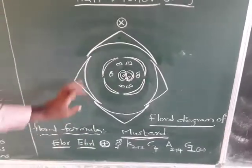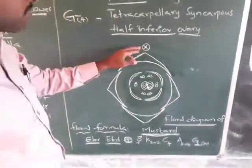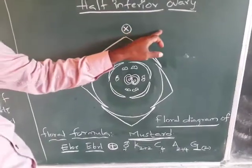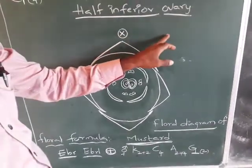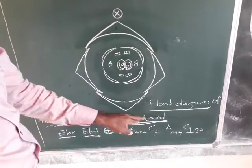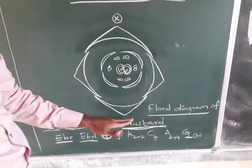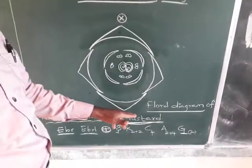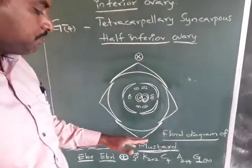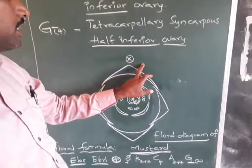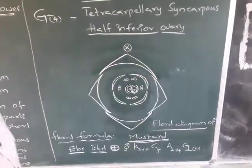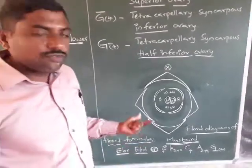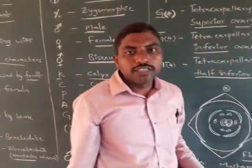The diagram also shows the posterior and anterior ends of the flower, which in some flowers are indicated with bracts. So these are the technical terms of the floral formula and floral diagram. I hope you have understood — thank you.